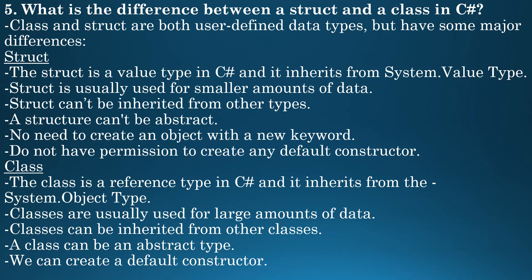And what is class? The class is a reference type in C-Sharp and it inherits from the System.Object type. Classes are usually used for large amounts of data. Classes can be inherited from other classes. A class can be an abstract type, and we can create a default constructor when using a class.